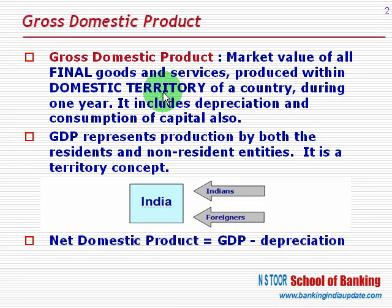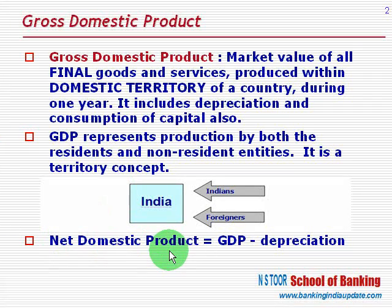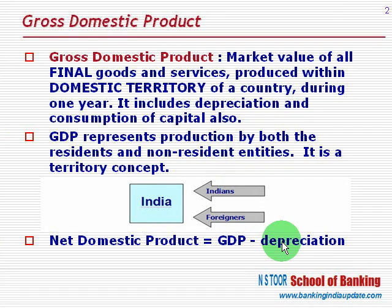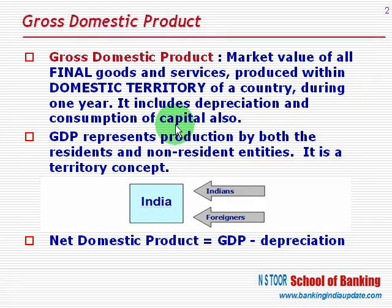We have another concept called Net Domestic Product. Out of GDP, if the amount of depreciation — the amount of consumption of capital — is reduced, what we get is Net Domestic Product.